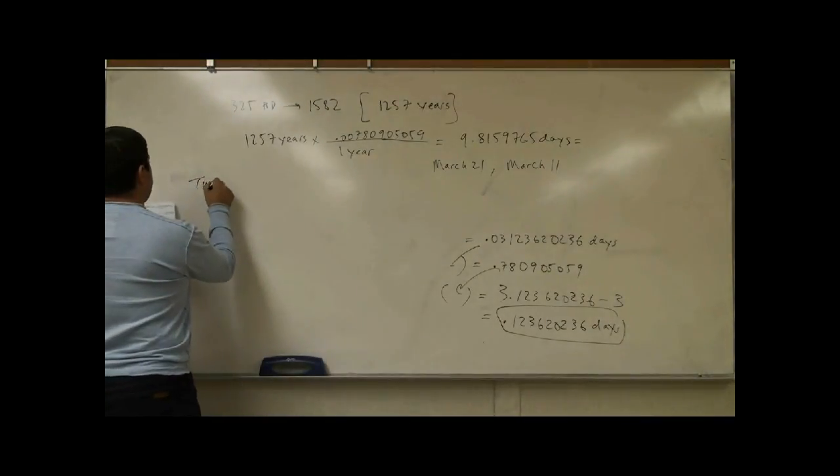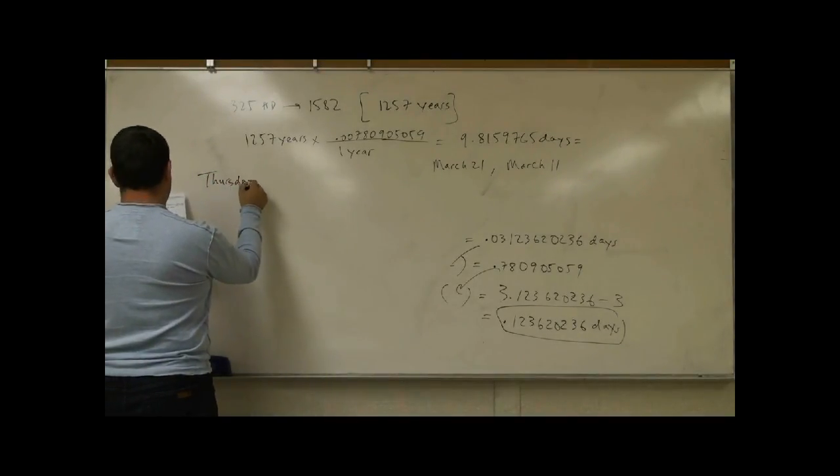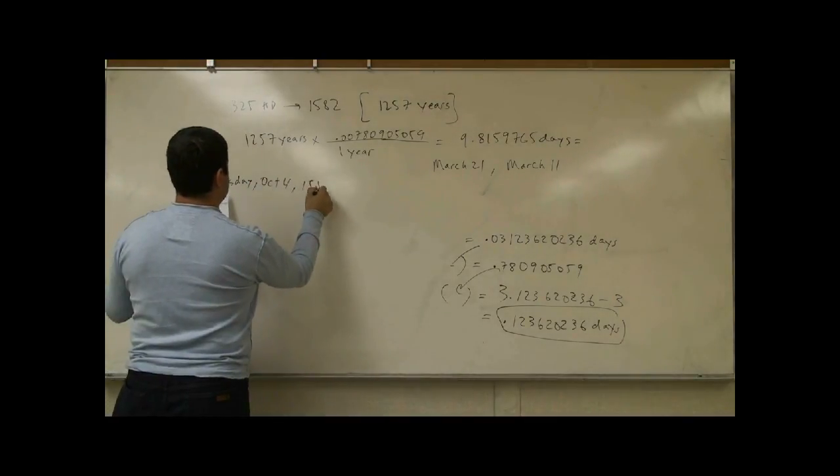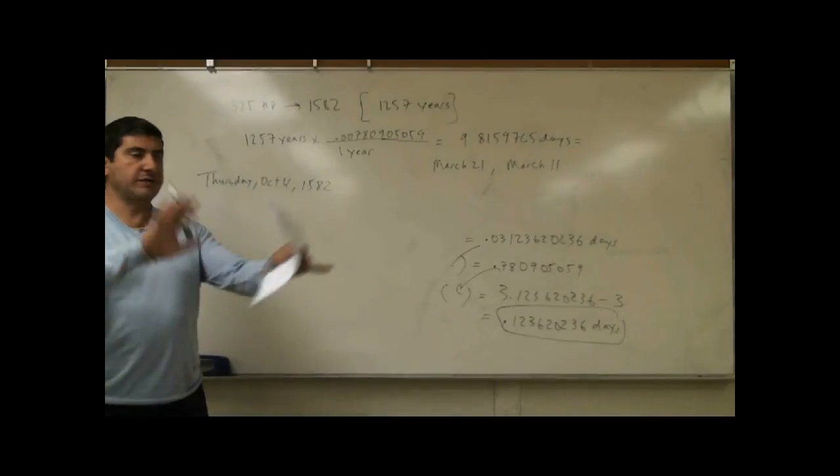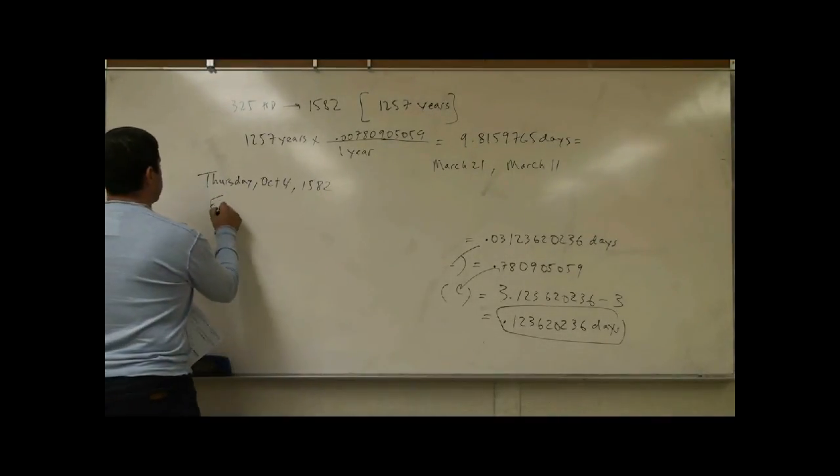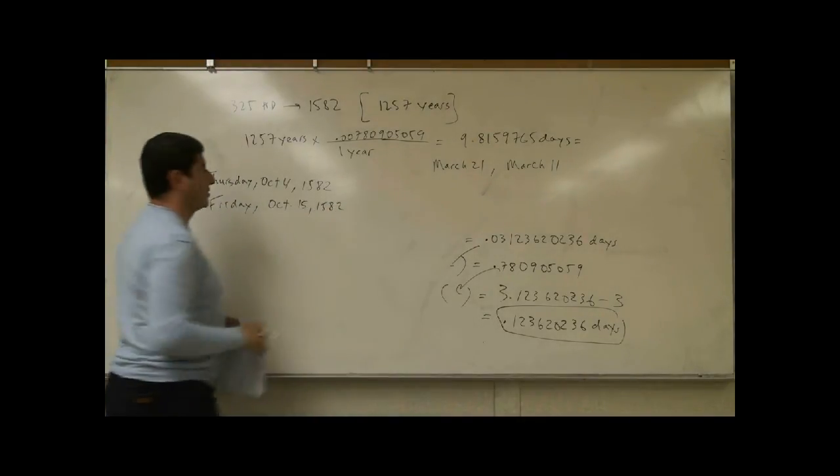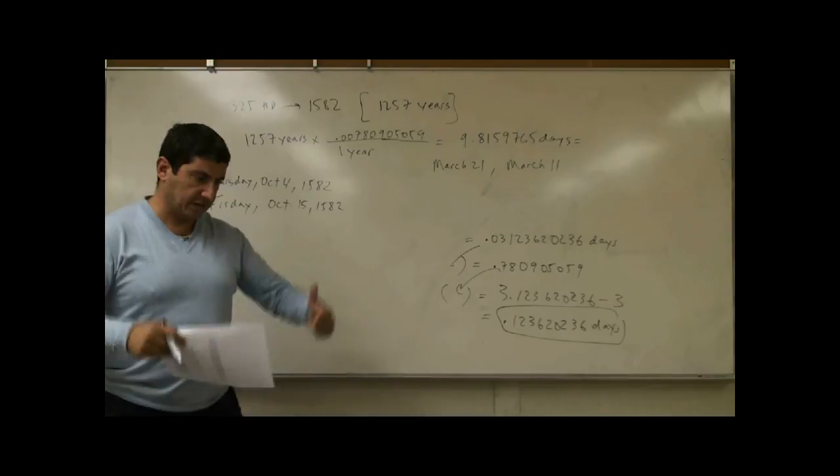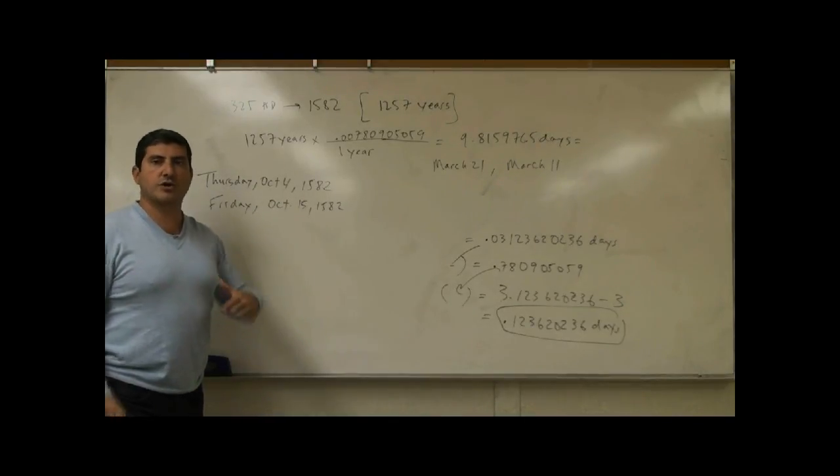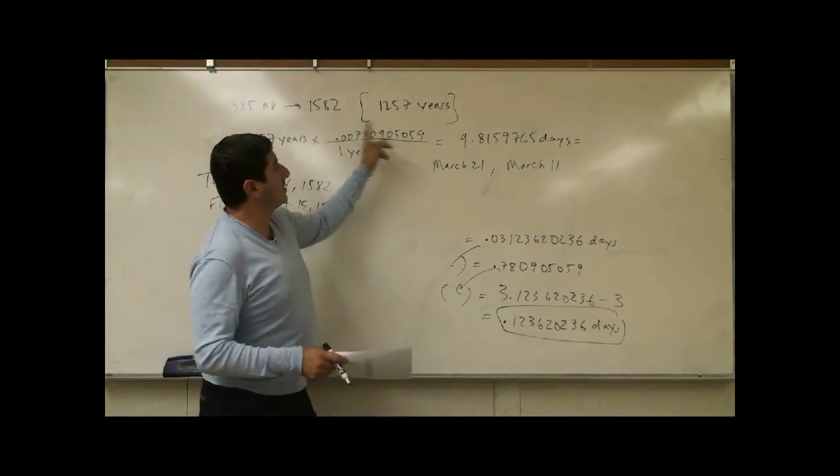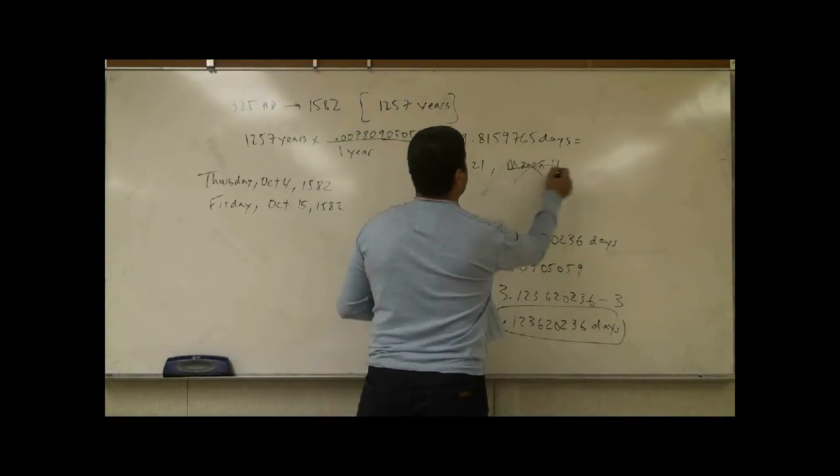So this was Thursday, October 4th, 1582. The next day was supposed to be what? Friday, October 5th, right? They said no. Everybody in the world on the Gregorian calendar, the next day is going to be Friday, October 15th, 1582. So basically, they went from Thursday to Friday, but the Thursday was October 4th, the Friday was October 15th. That's about 10 days, 11 days. So they skipped that many days in order for the 10 extra days that had been counted to come back and for spring to occur March 21st again. So they wanted to discount that.